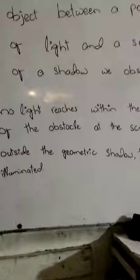We place an opaque object between a point source of light and a screen in addition of a shadow. We observe no light reaches within the geometrical shadow of the obstacle at the screen. Outside the geometrical shadow, the screen is uniformly illuminated.